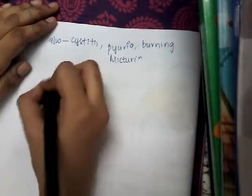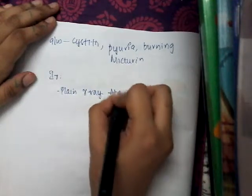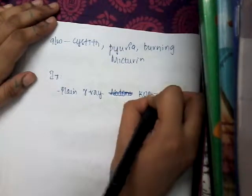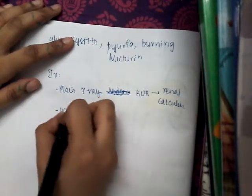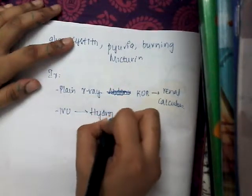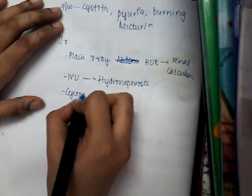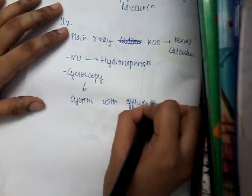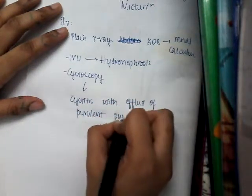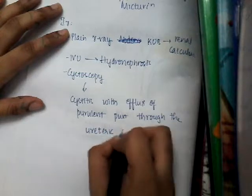What are the investigations? Investigations include plain X-ray abdomen, then X-ray of the kidney-ureter-bladder (KUB) — this shows renal calculus. Intravenous ureterography shows hydronephrosis. And cystoscopy reveals cystitis with efflux of purulent pus through the ureteric orifice. I will just draw this diagram, because this is what is diagnostic of this disease — pyonephrosis.